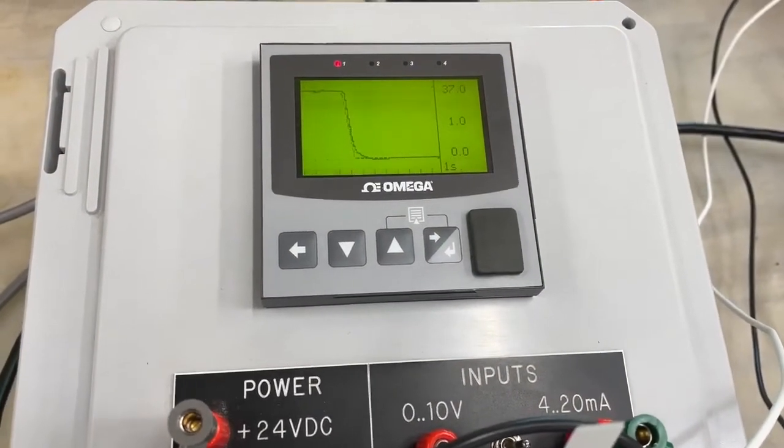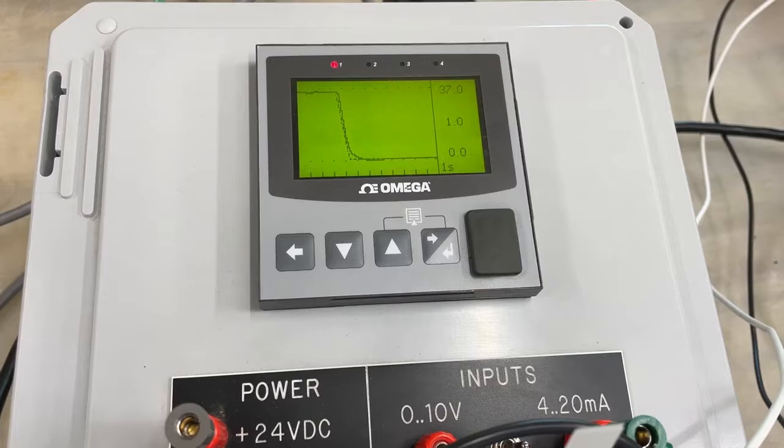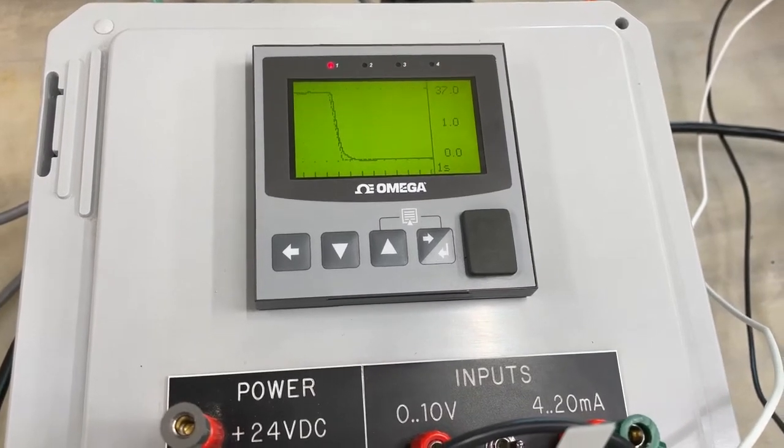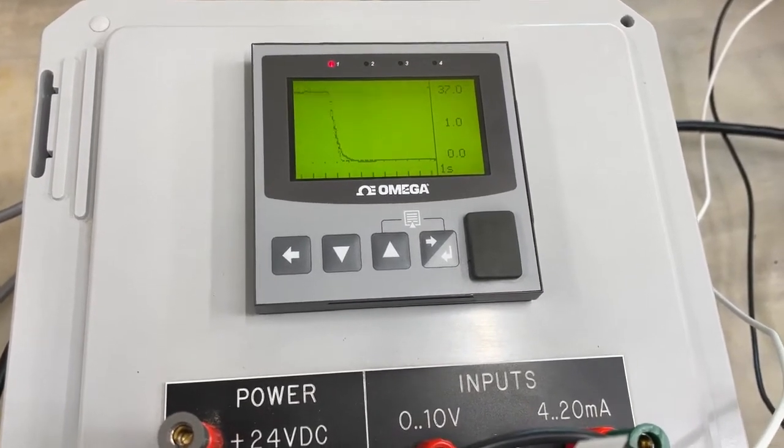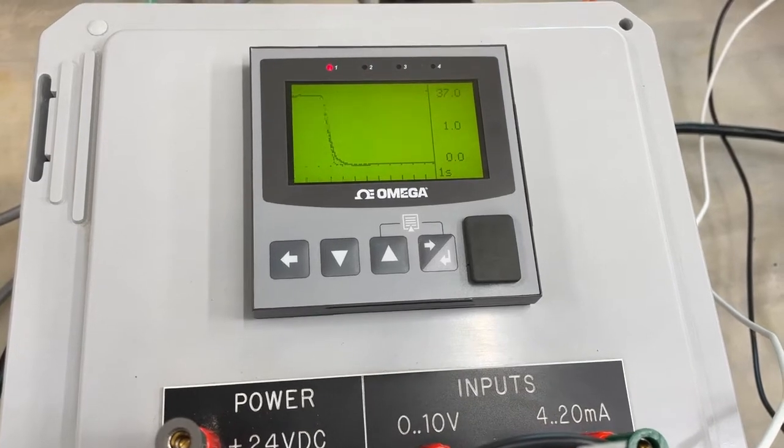I've just changed the set point to 1% of the total range which is 10 grams per minute. You can see the PID loop worked to get the flow to reach the set point but now that it's steady I will increase the set point.